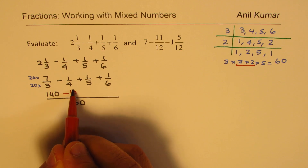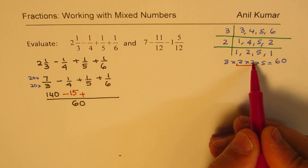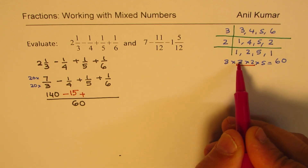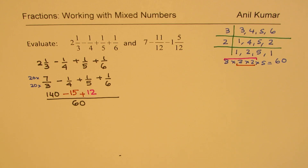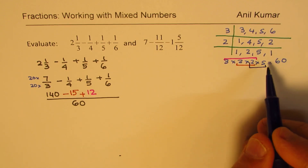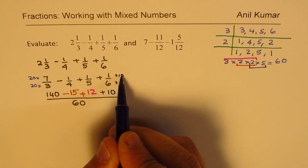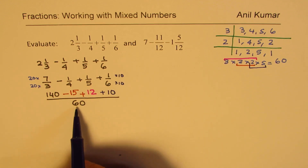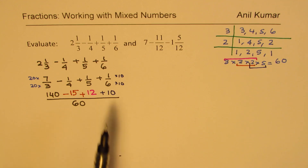So we multiply both numerator and denominator of ¼ by 15 to get 15/60. For ⅕: leaving out 5, we have 4 × 3 = 12, so multiply by 12 to get 12/60. For ⅙: 3 × 2 = 6 and 6 × 10 = 60, so multiply by 10 to get 10/60. All fractions are now written as equivalents with denominator 60.